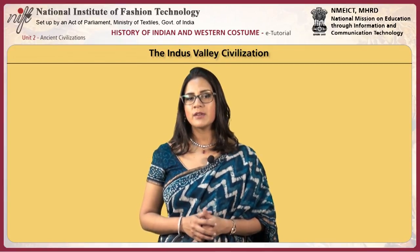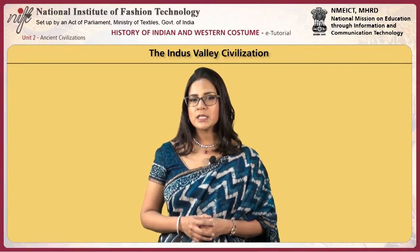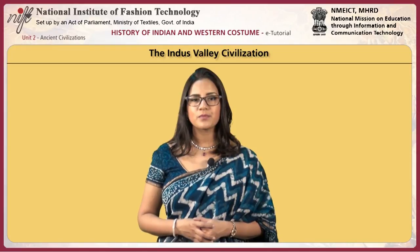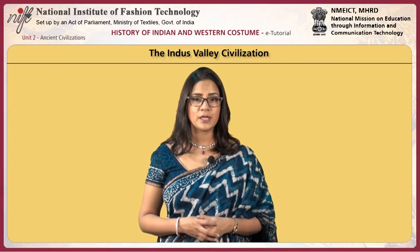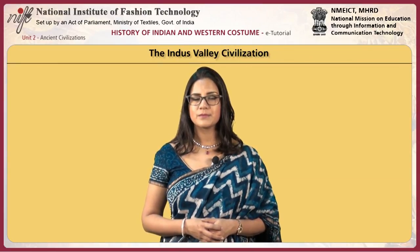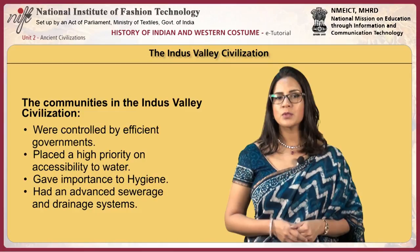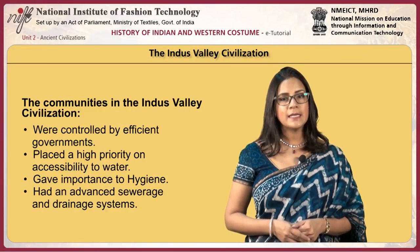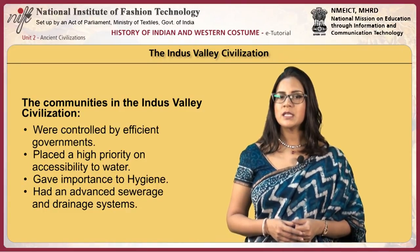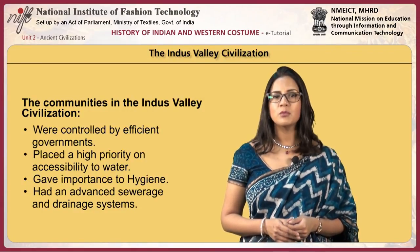The cities of the Indus Valley Civilization were well organized and solidly built out of brick and stone. Their drainage systems, wells and water storage systems were the most sophisticated in the ancient world. They also developed systems of weights and trade, made jewelry and game pieces, and toys for their children. The quality of municipal town planning indicates these communities were controlled by efficient governments that placed a high priority on accessibility to water. Modern scholars tend to see in this the influence of a religion which places an emphasis on ritual washing, much like modern Hinduism.